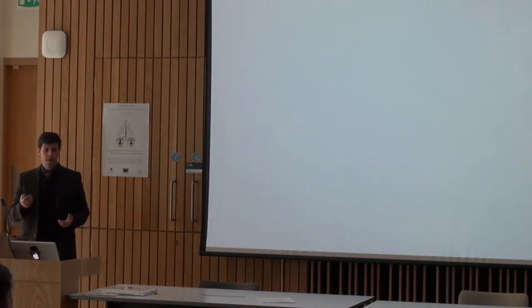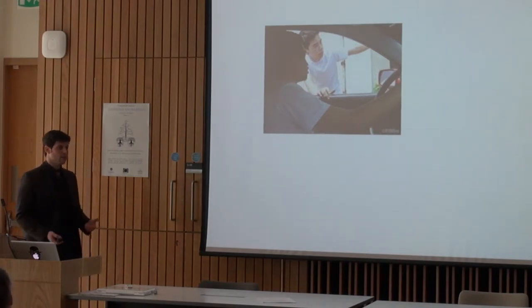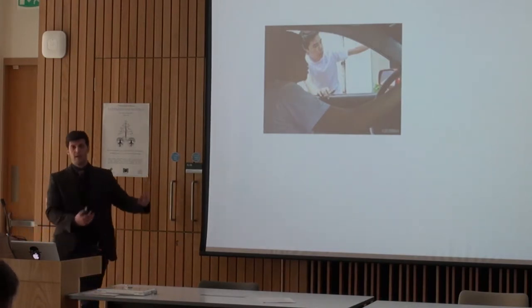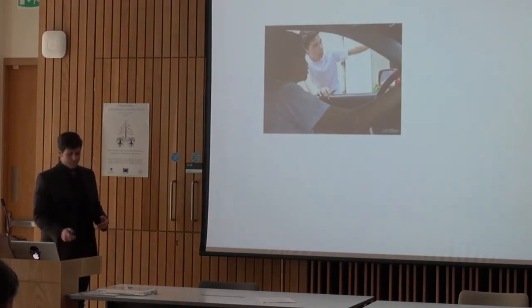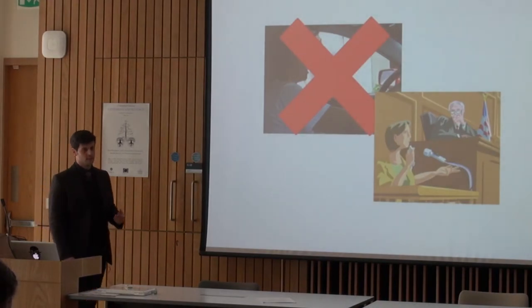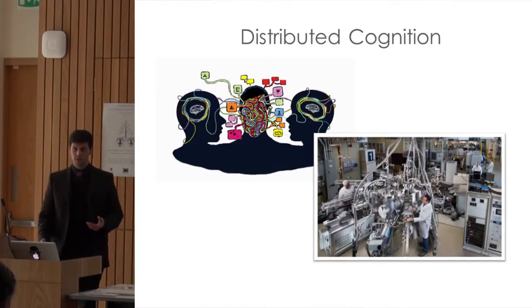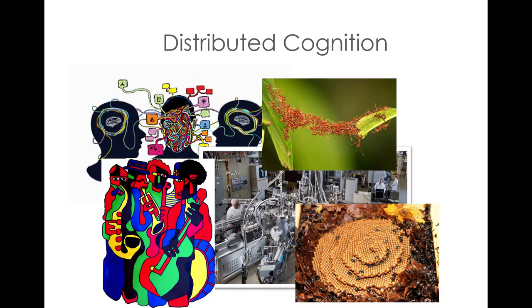When it comes to distributed cognition, we can't say that asking for directions from a stranger counts, because in such cases there are no mutual interactions — we just ask for information, receive it, and that's the whole story. The same goes for testimony in a court of law. But other cases do qualify: brainstorming, scientific research teams, and several types of swarm intelligence, which is where the idea of distributed cognition originates.